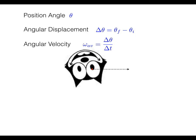And that w is a Greek letter called omega. If you want the instantaneous velocity, you take the limit as delta t approaches zero of delta theta over delta t, also known as d theta by dt. Or in other words, you just take the derivative of theta with respect to time.